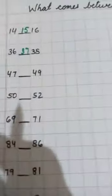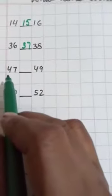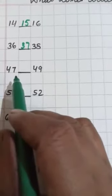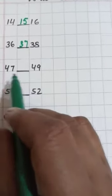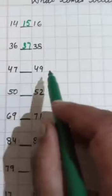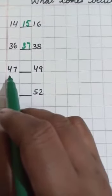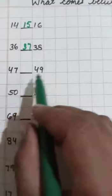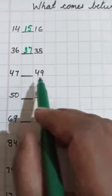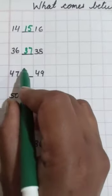Now children, the next number is 47. 47-49. So, in between 47 and 49, what number is come? 48.